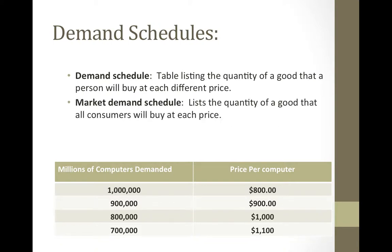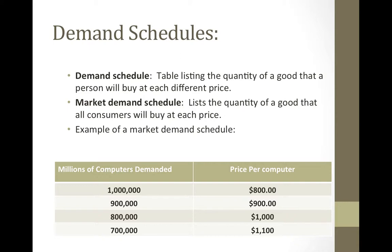A market demand schedule lists the quantity of a good that all consumers will buy at each price. As you can see, in regards to millions of computers demanded, if the price of a computer is $800, the demand will be at one million. And if the price is $1,100, it will drop to 700,000 because of the income effect and people's ability to pay. So this is a good example of a market demand schedule.